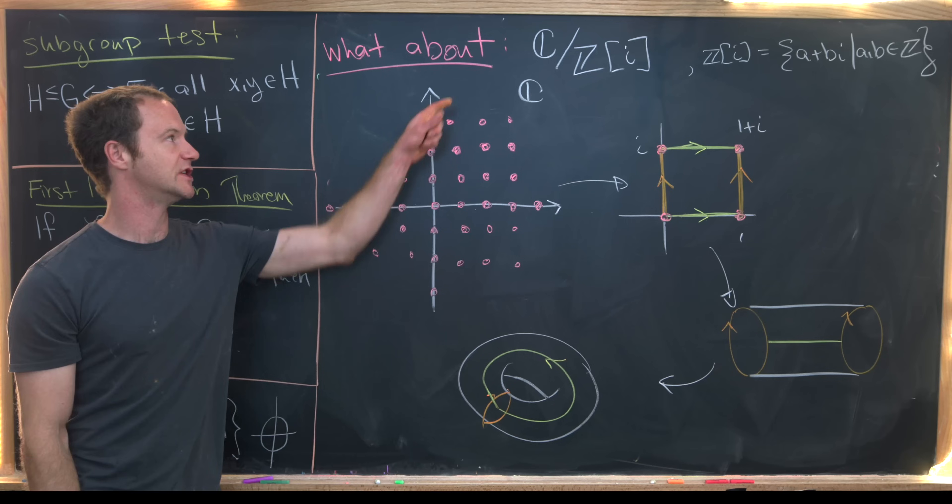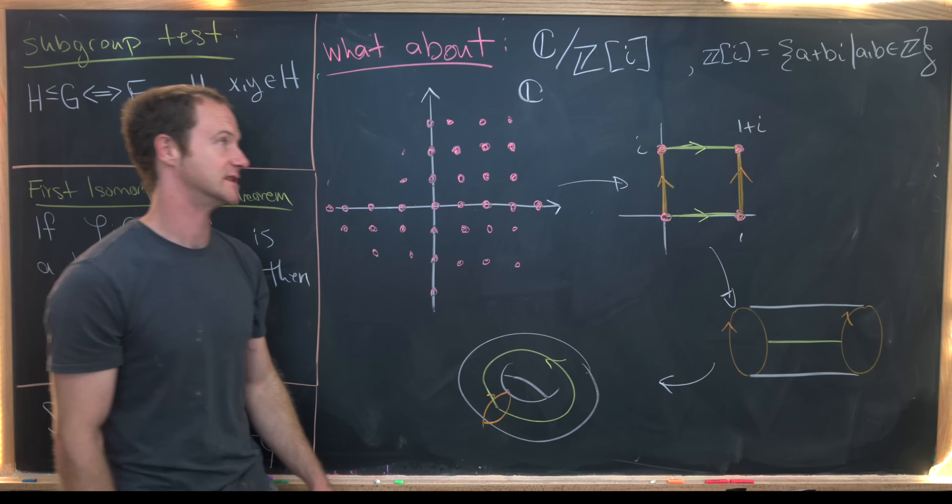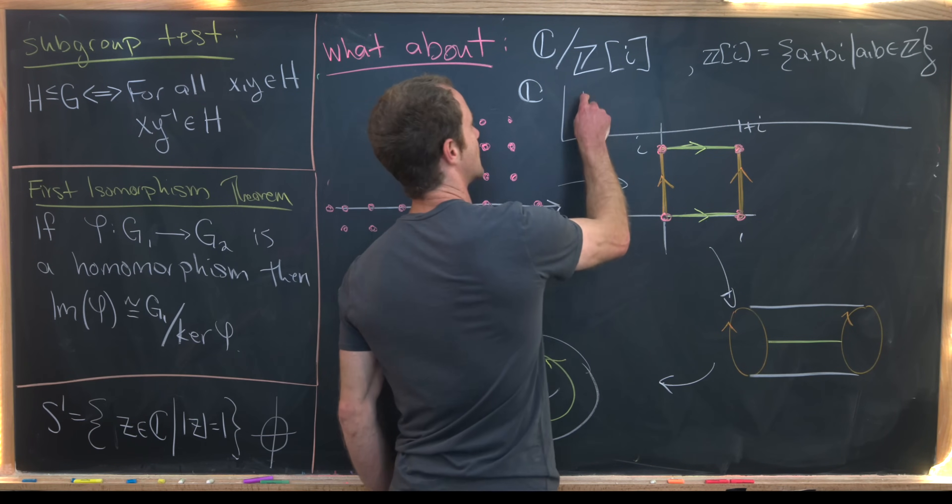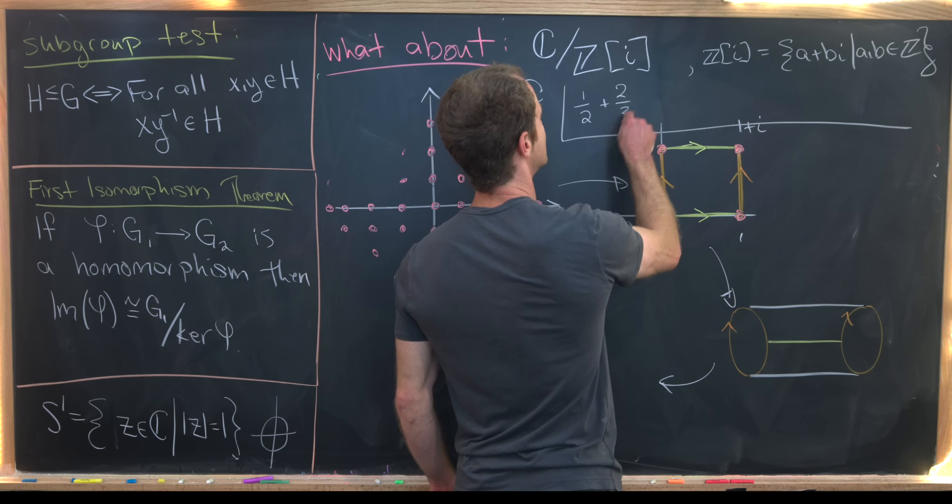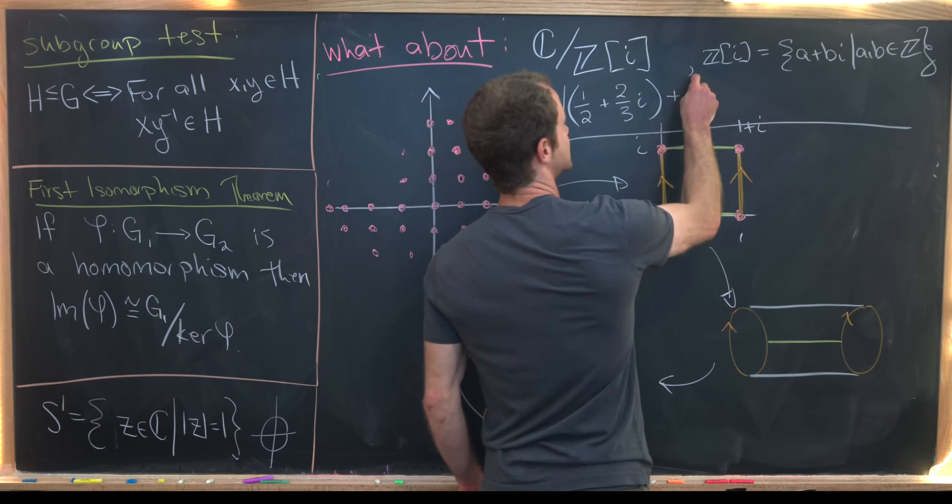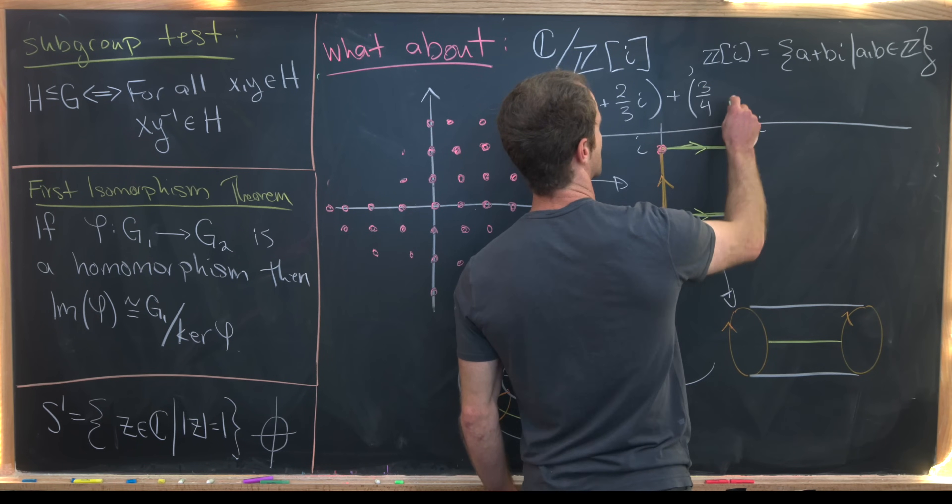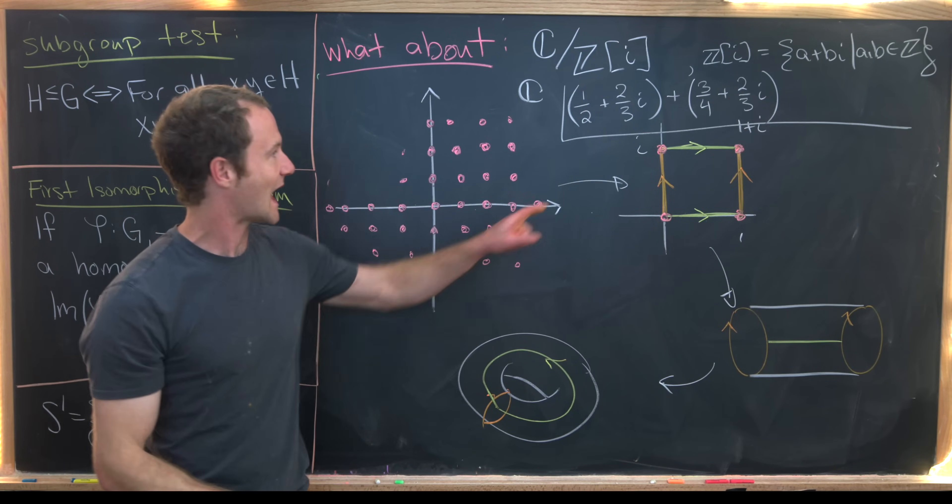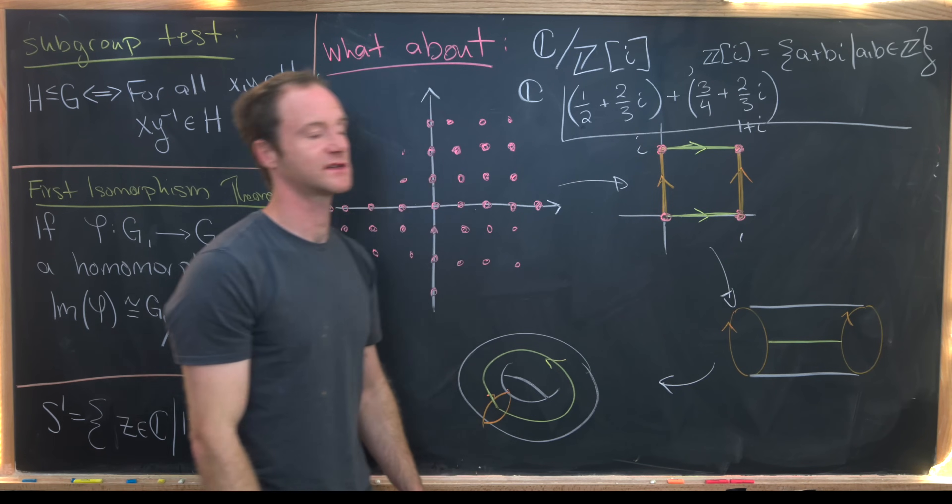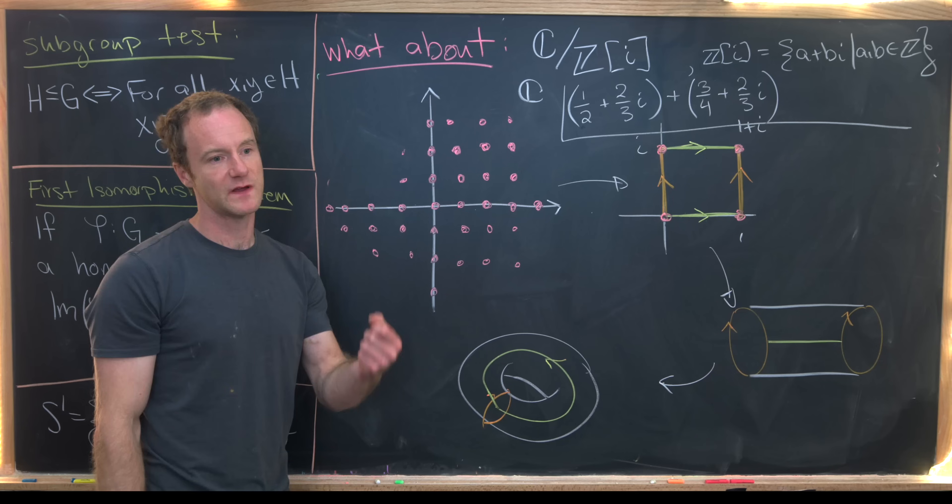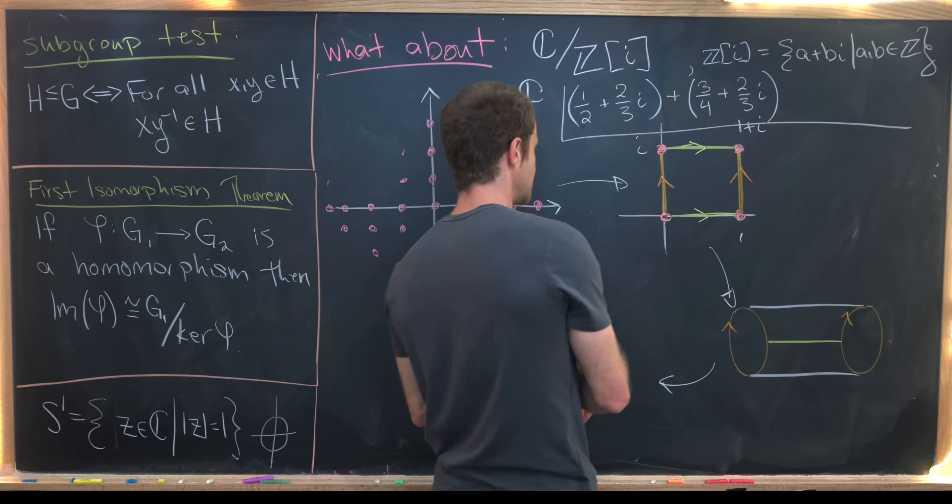Now, before we finish, I want to do an example of a calculation in C mod Z adjoined i. This is a fairly simple calculation, but I think it's worth it. So let's take one half plus two thirds i. So that's an example of an element within C plus. Then let's say we have three quarters plus two thirds i. So if we add the real parts, we've got one half plus three quarters. But that's going to give us five over four. But five over four is bigger than an integer. So we can move it back to something that's smaller than an integer.